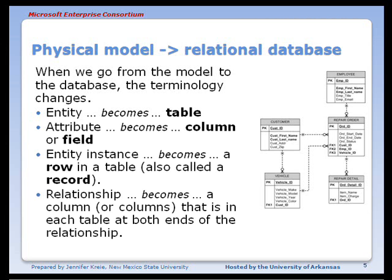The relationship, the line that you see in the data model, becomes a column that is in each table at both ends of the relationship.